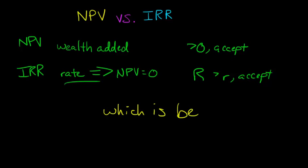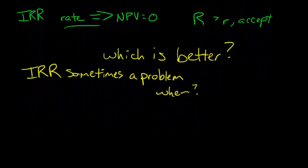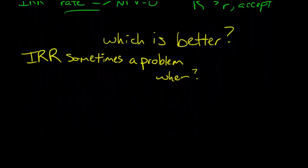Both of these are really effective methods, but it's important to note that the IRR cannot always be used. IRR is sometimes a problem. That doesn't mean it's a bad metric or necessarily worse, but it's important to know when. When is it a problem? That's what we're going to talk about here, sometimes when it's actually better to use NPV because the IRR is going to create some kind of an issue.